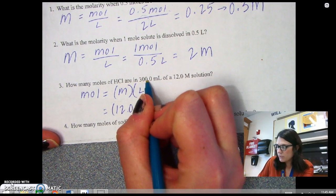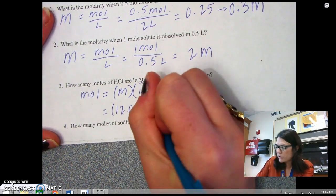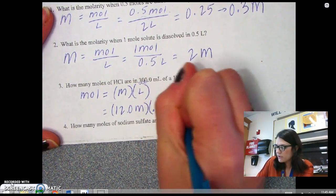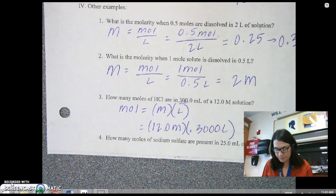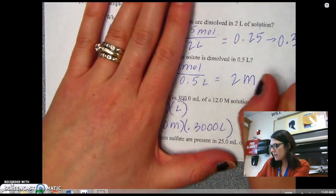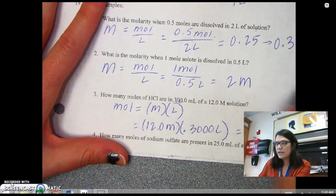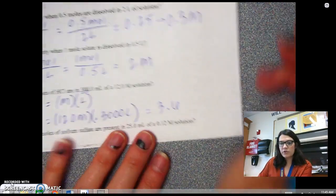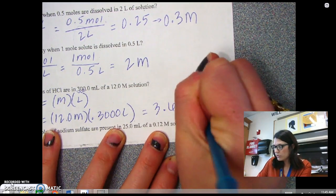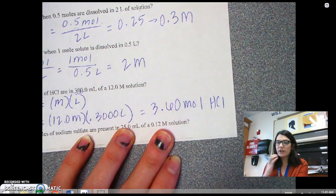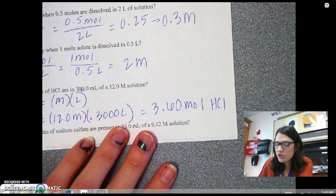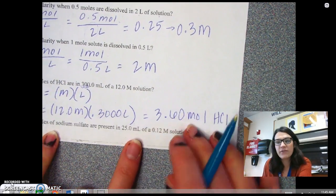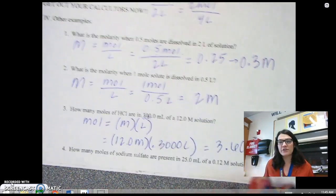So my molarity is 12.0 molar, and my volume, it's in milliliters, so I need to move the decimal over three times, so I'm going one, two, three, so it's 0.3000 liters. So I'm doing 12 times 0.3, and that's going to be 3.6, and I need one more significant figure, so it'd be 3.60 moles of HCl are inside of that solution, and luckily for you, you know how to convert to grams, so you can ultimately convert this to grams to figure out how many grams are inside of that solution.